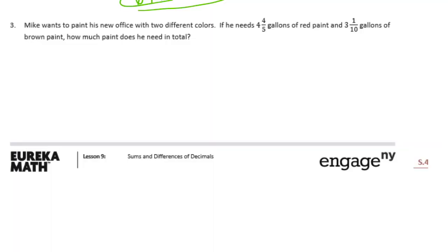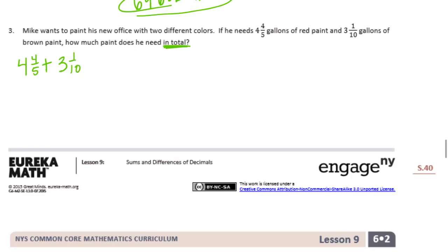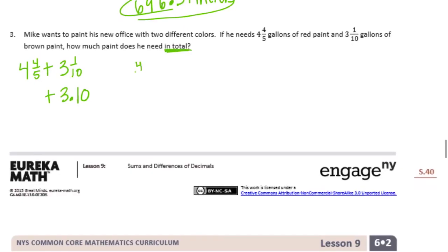Number 3. Mike wants to paint his new office with two different colors. If he needs 4 and 4 fifths gallons of red paint and 3 and 1 tenths gallons of brown paint, how much paint does he need to buy in total? We want to know how much he has in total, so we are adding. 4 and 4 fifths — I need to make that into tenths — so I get 8 tenths: 4 and 8 tenths.